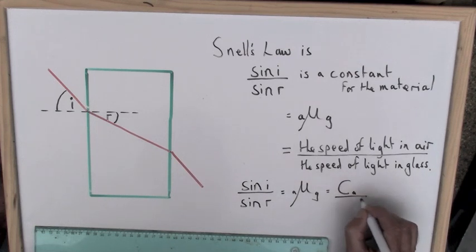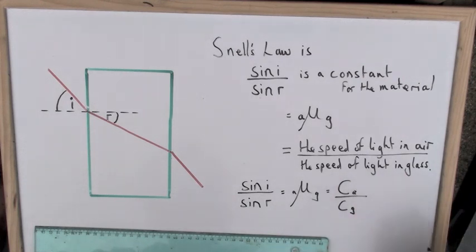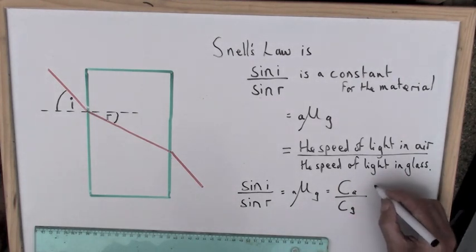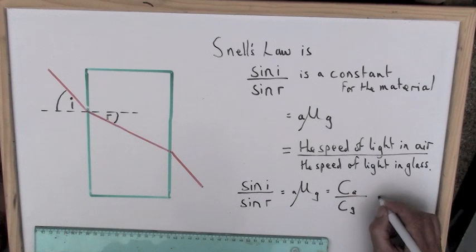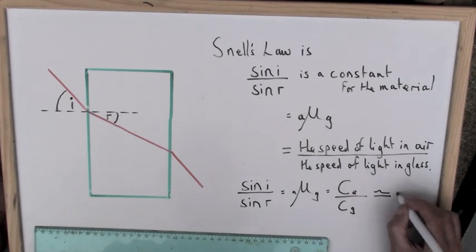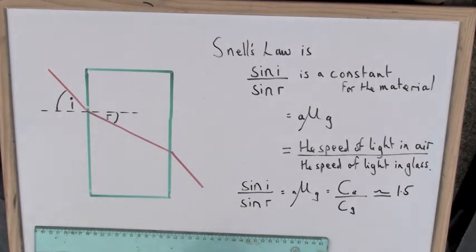For common glass, such as window glass, that refractive index is likely to be about 1.5, though with more dense materials added, such as lead, it can be as high as 1.6 and even 1.7. There are no units for refractive index because it is a ratio of two quantities.